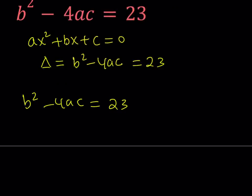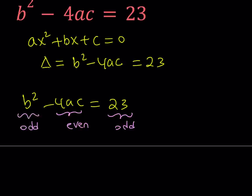If you're solving equations with integer solutions, also known as Diophantine equations, parity plays an important role. Parity means whether a number is odd or even — that's one of the things we use in number theory. If you look at this equation carefully, you're going to notice that 4 times ac is a multiple of 4, therefore it's always even. So b squared minus an even number equals 23, which is an odd number.